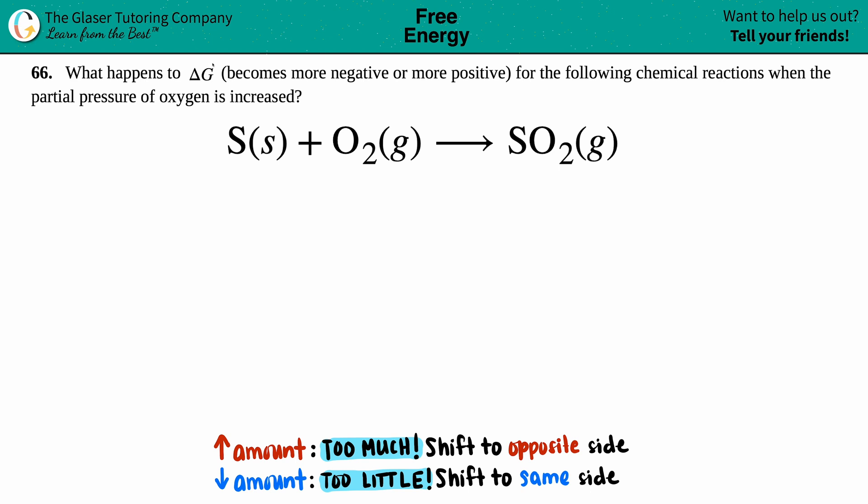Number 66: What happens to delta G, does it become more negative or more positive for the following chemical reactions when the partial pressure of oxygen is increased? Okay, so we have S solid plus O2 gas which will yield SO2 gas, and they did tell us that we're increasing the partial pressure of oxygen.